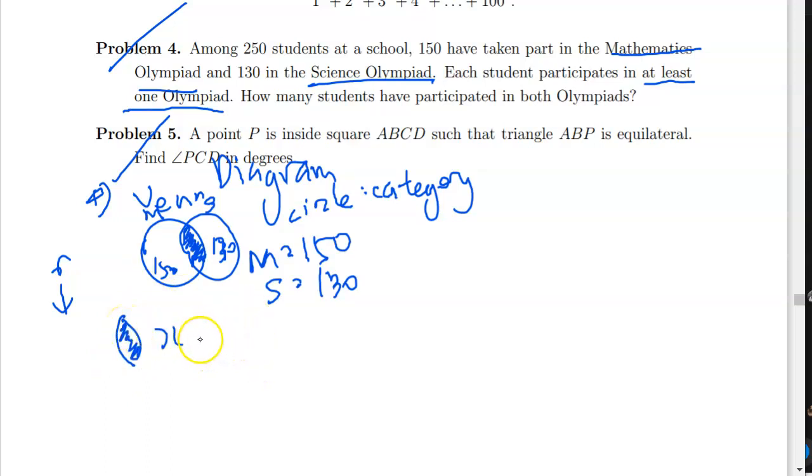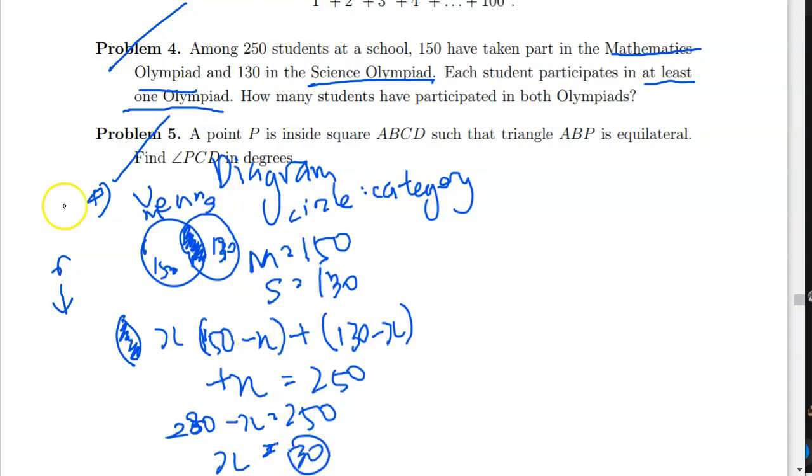So denote the area overlapped as x. So 150 minus x, which is the circle on the left, meaning Mathematics Olympiad, but we do not include this part, plus 130 minus x, circle on the right, Science Olympiad, and we still do not include this overlapping part, plus x, because we will be including this back, is 250. So using some basic algebra, we will get that 280 minus x equals to 250. So after some calculations, we get that x is equal to 30. So this is our answer for number 4.